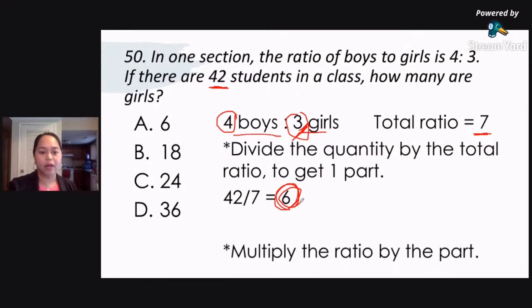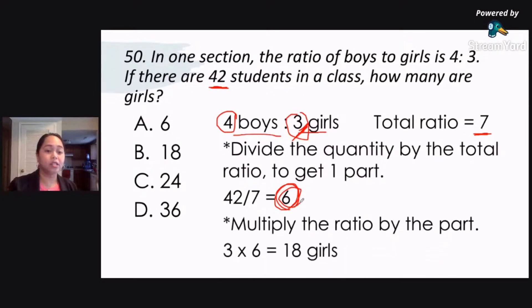We simply multiply 3 which is given in our ratio by 6 which is for each part. So 3 times 6, very easy, your answer would be 18. Okay, so 18 girls.